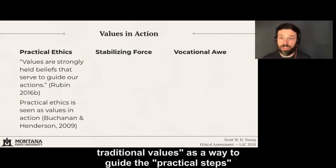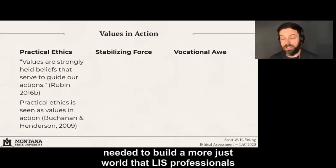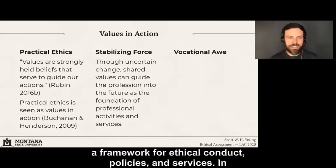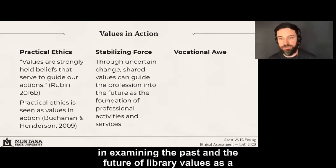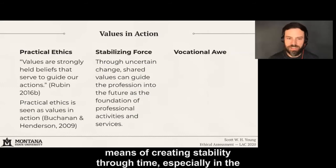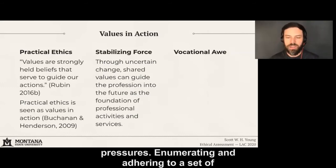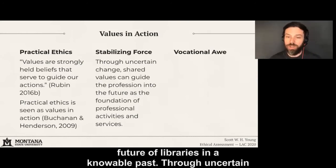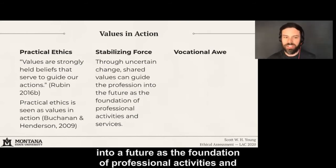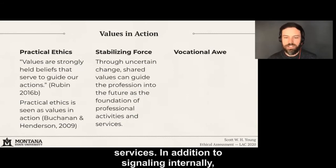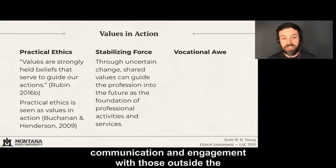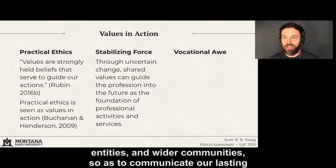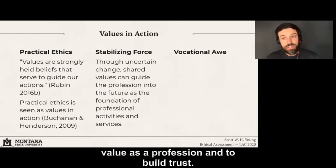Our professional values can provide a framework for ethical conduct, policies, and services. The library literature also reveals an interest in examining the past and future of library values as a means of creating stability through time, especially in the face of change driven by technology or economic pressures. Enumerating and adhering to a set of professional values reflects a desire to root the unknown future of libraries in a knowable past. Professional values can also serve as a tool for communication and engagement with those outside the profession — sharing our values with external stakeholders such as publics, other campus entities, and wider communities, to communicate our lasting value as a profession and build trust.